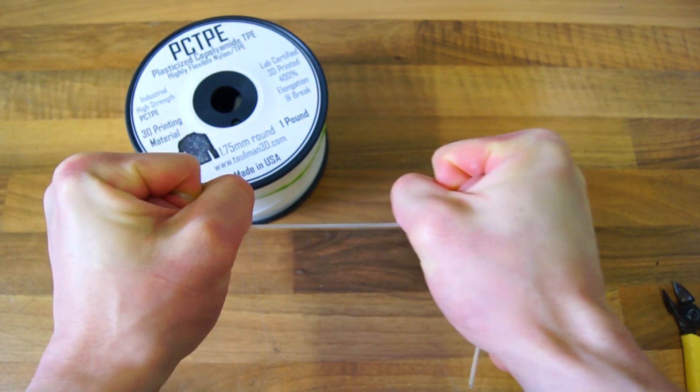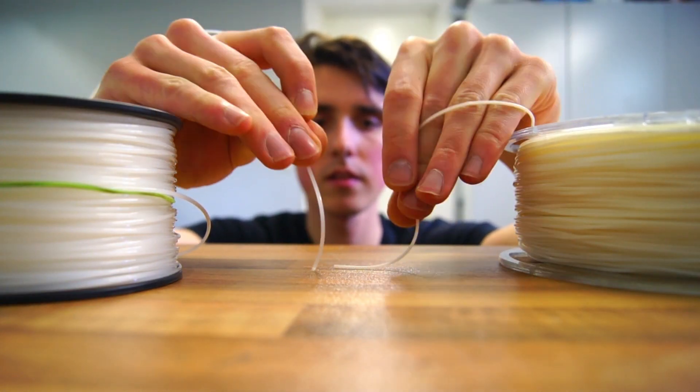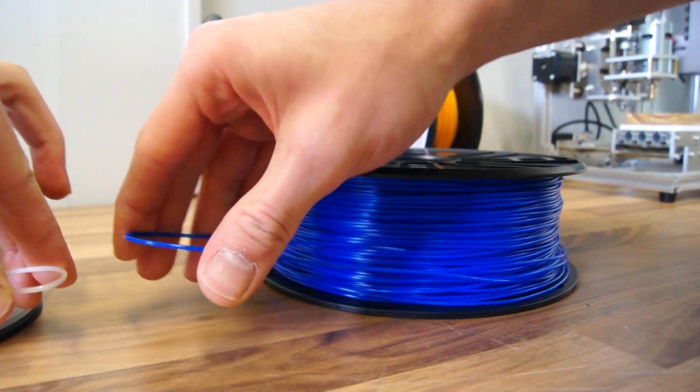The nylon? Not so much. You can see the difference in stiffness, though the nylon is significantly more flexible than the ordinary PLA.